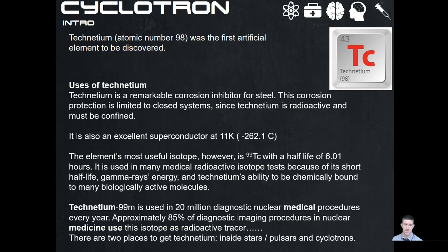There are only two places we can get it. We can either go to the inside of a star — it needs to be a very specific star, something like a neutron star or a paired neutron star orbiting each other. The other place we can get it is a cyclotron. So one of these is much cheaper and much more feasible to get something that's so beneficial.